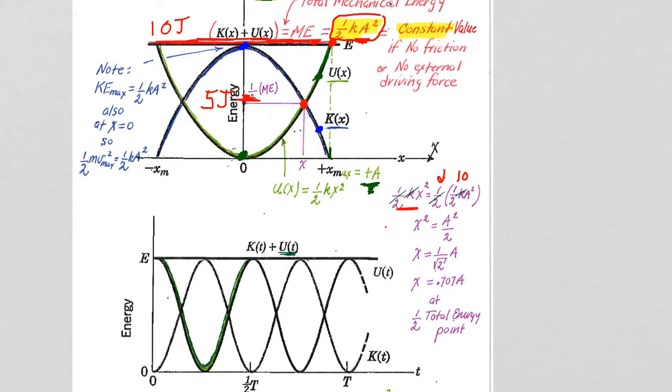And then we just solve for x. When you solve for x, you get the 0.707 that we had talked about before, so it's just a reminder that the spring is non-linear with energy, even though it's linear with force.